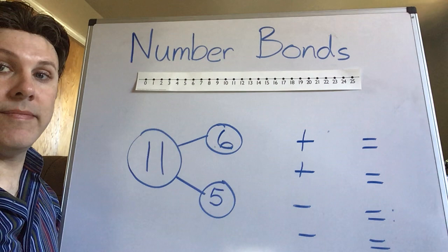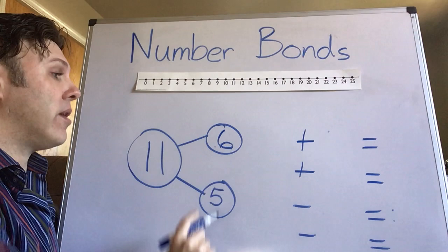Now let's make our four equations. Ready? What do we do first? That's right. We're gonna take the two smaller numbers.